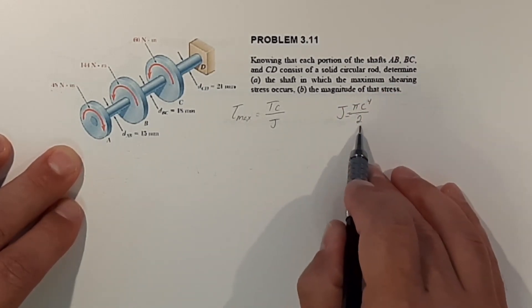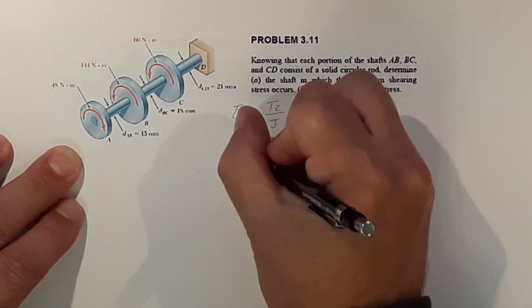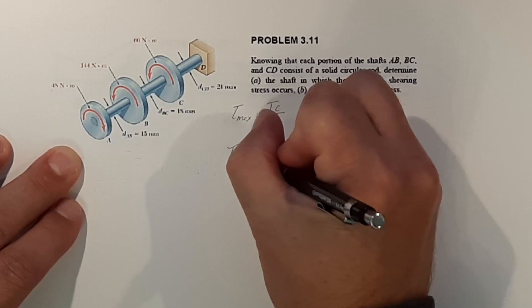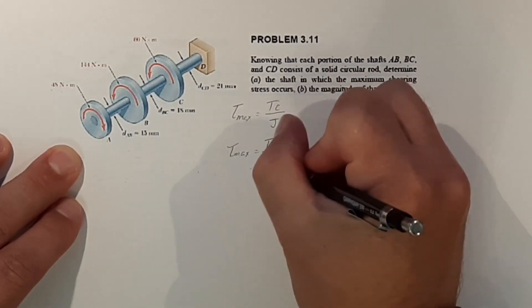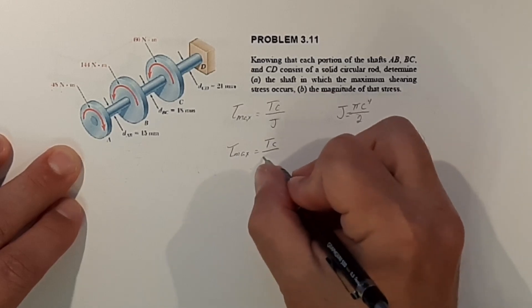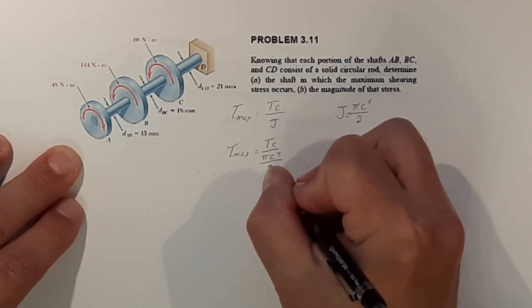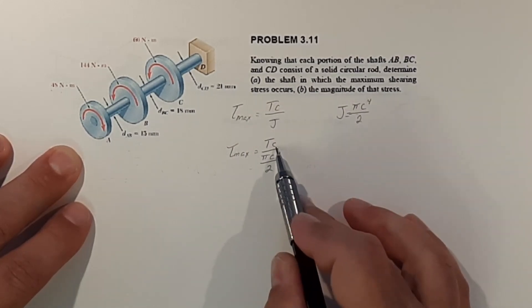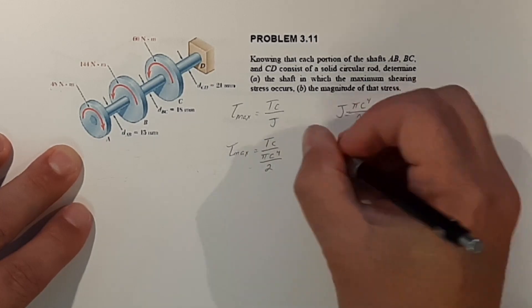If we plug this equation into our equation here we get that tau max is equal to T C over pi C to the fourth over 2. Now this C will subtract from this C and the 2 will move to the top.